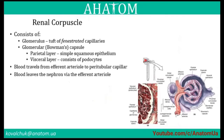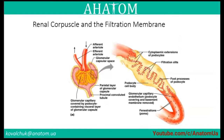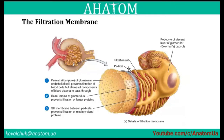Blood travels from the efferent arteriole to the peritubular capillaries. Blood enters the nephron via the afferent arteriole. At the renal corpuscle and filtration membrane, filtration slits are present on both sides of the podocyte cell body. The filtration membrane — with fenestrations or pores of glomerular endothelial cells — prevents filtration of blood cells; it prevents filtration of larger proteins, and filtration slits between pedicels prevent filtration of medium-sized proteins.